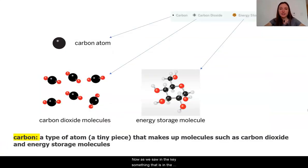Now, as we saw in the key, something that is in the digital model and seems to be important is this small little atom of carbon. Just as we learned in our chemical reactions unit, a carbon atom is one single atom of carbon. It looks like this carbon atom is also involved in the molecule carbon dioxide. But there are other things attached to this carbon atom in that carbon dioxide molecule.